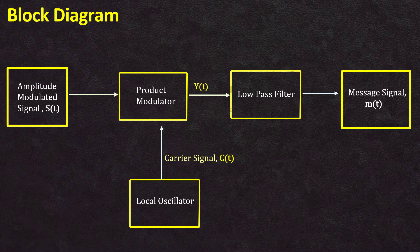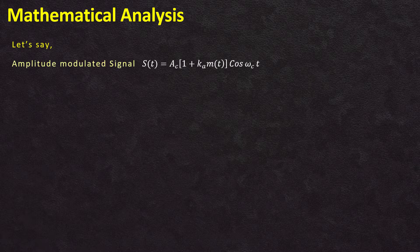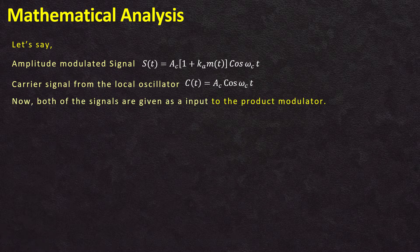Let's see the mathematical analysis. The amplitude modulated signal s(t) is equal to Ac times (1 + ka·m(t)) times cos(ωc·t), and the carrier signal from the local oscillator c(t) is equal to Ac·cos(ωc·t). This carrier signal must be synchronized with the carrier signal of the incoming amplitude modulated signal. Both signals are given as inputs to the product modulator.